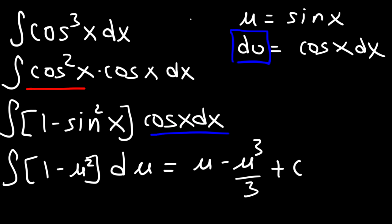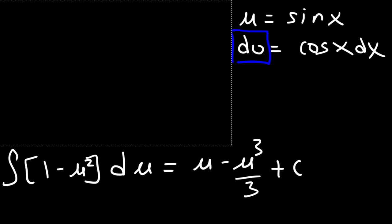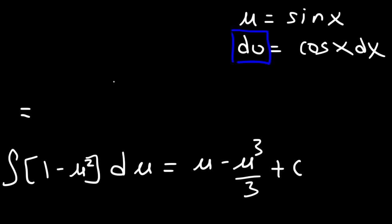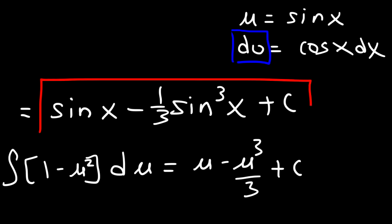Now the last thing we need to do is replace the u variable. The final answer is going to be sine x minus 1/3 sine cubed x plus c. And that's all you need to do in this problem.